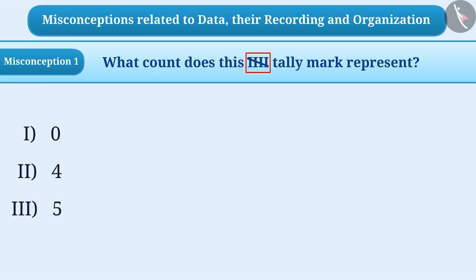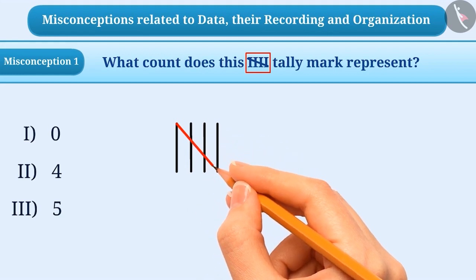The tally mark shown here has a slant line drawn on four straight lines. When the lines are drawn diagonally, some children feel that the lines have been cut.